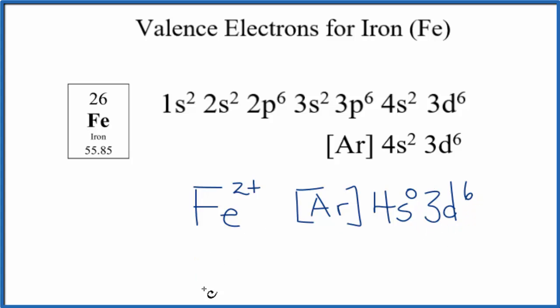The other way you'll see iron form chemical bonds is Fe3+, the iron 3 ion. And its electron configuration looks like this. Here, it's lost these two valence electrons and one from the d. So we end up with this 4s0, 3d5.